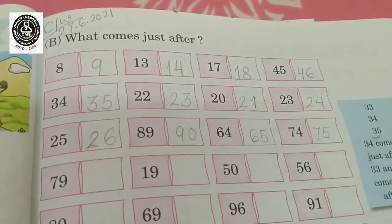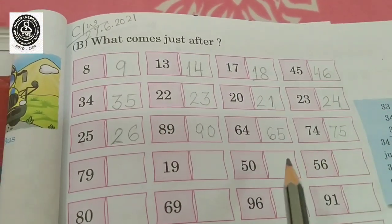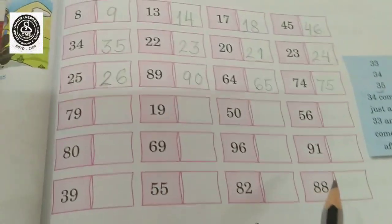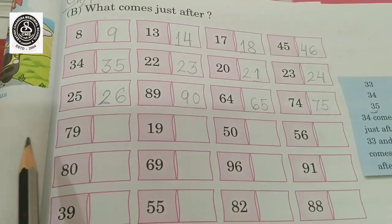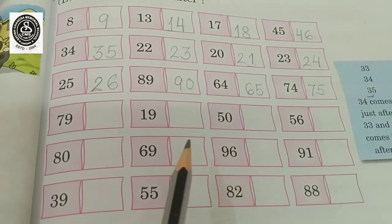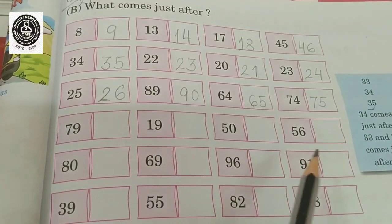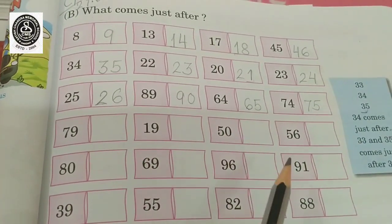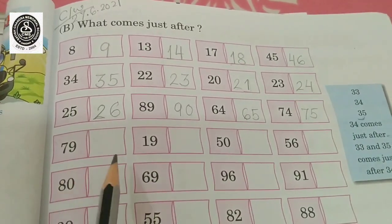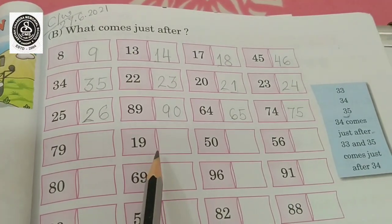So my dear students, this much I have done. So now from here you have to do it by yourself. From here you have to do it by yourself. And you have to follow forward counting. You have to follow forward counting. So what comes after 79? You have to write here. What comes after 19?